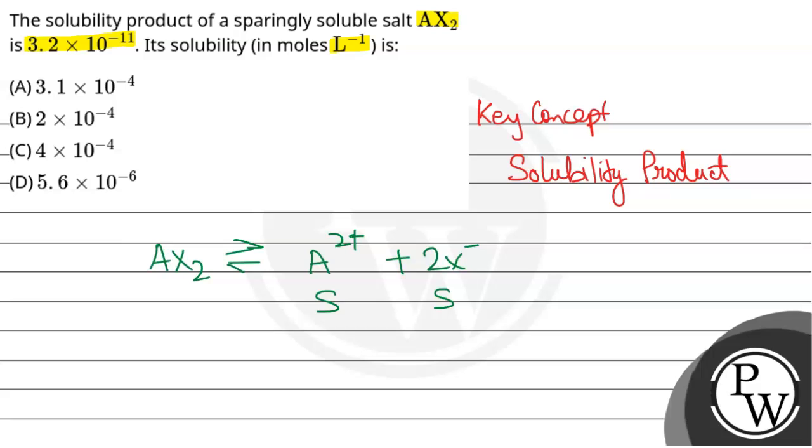If we write S for solubility, then the expression will be Ksp equals S times (2S)². We have a coefficient here.